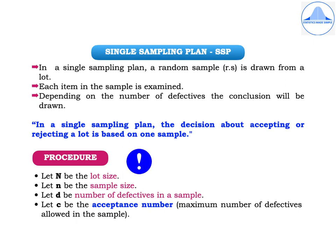Let's begin with a single sampling plan. In a single sampling plan, a random sample is drawn from a lot. Each item in the sample is examined, and depending on the number of defectives, a conclusion will be drawn. To make it simple: in a single sampling plan, the decision about accepting or rejecting a lot is based on one sample. This is important to remember.